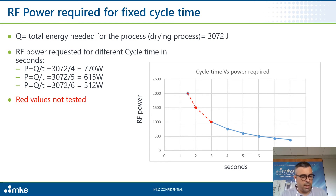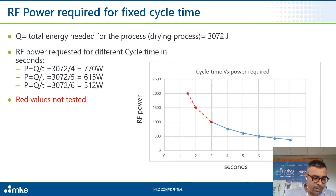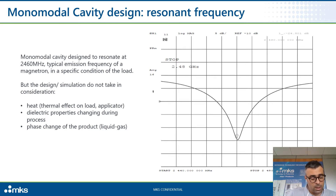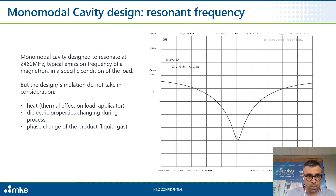Now, we analyze a true example where we designed a monomodal cavity for drying. Here you have some values of RF power required for that specific process. The monomodal cavity was designed with a resonant frequency of 2460 MHz, which is a typical emission frequency of a magnetron, in a specific condition of the load.